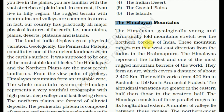First we will talk about the Himalayan mountains. The Himalayas are geologically young and structurally fold mountains that stretch over the northern borders of India. These mountain ranges run in a west-east direction from the Indus to the Brahmaputra. The Himalayas represent the loftiest and one of the most rugged mountain barriers of the world. They form an arc which covers a distance of about 2,400 km. Their width varies from 400 km in Kashmir to 150 km in Arunachal Pradesh. The altitudinal variations are greater in the eastern half than in the western half.